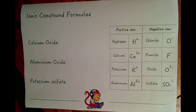Here's a few for you to try. Using the ions on this side over here, try and write the compound formulae for calcium oxide, aluminium oxide, and potassium sulfate. Pause the video now and give those a go.